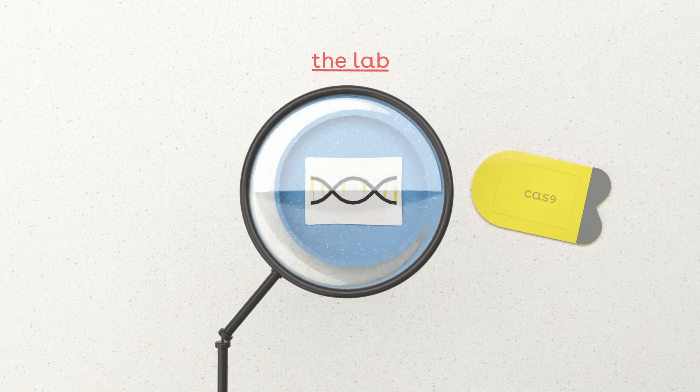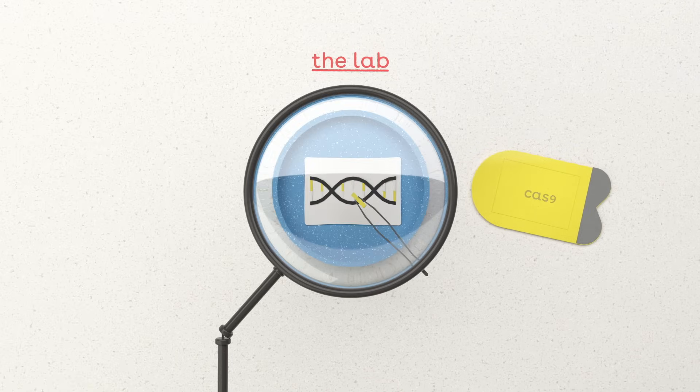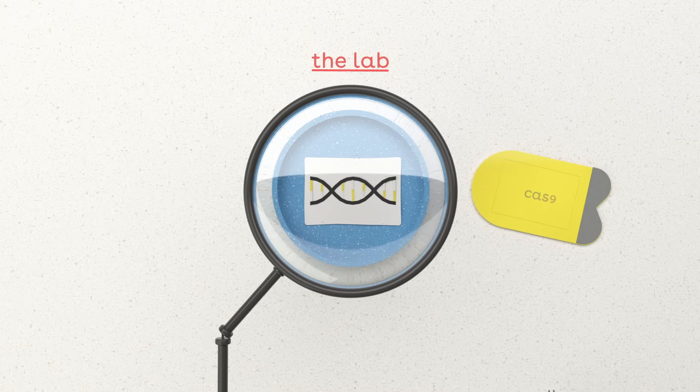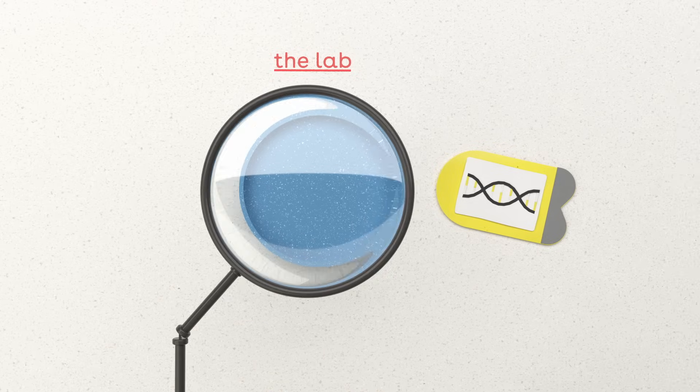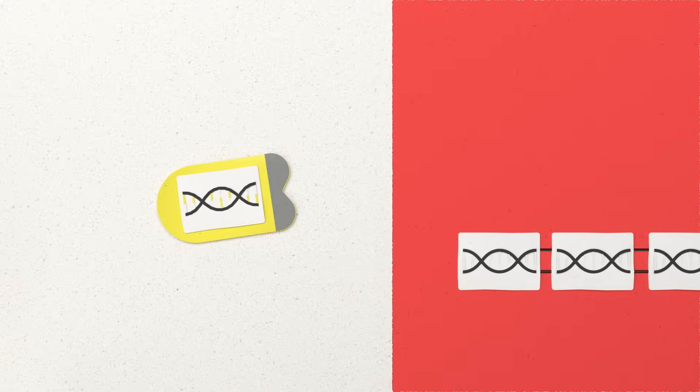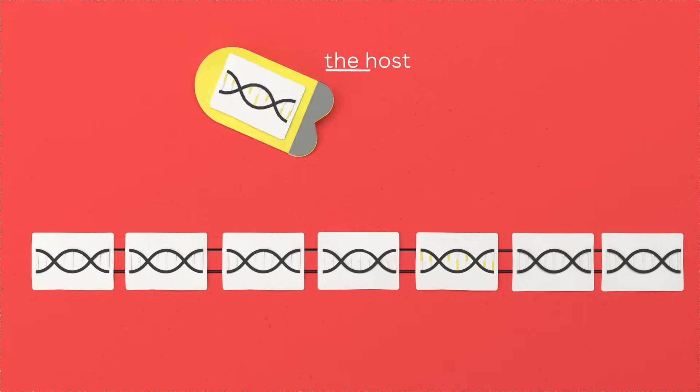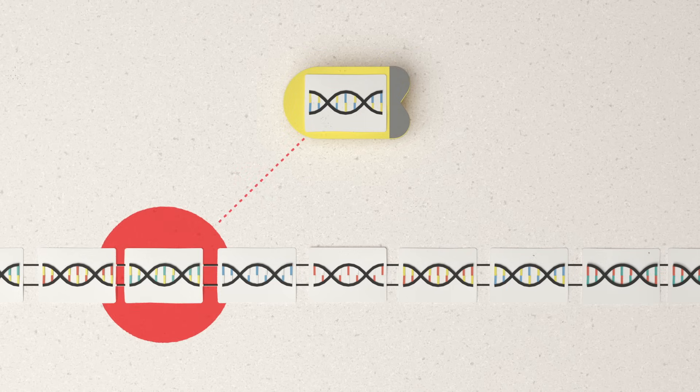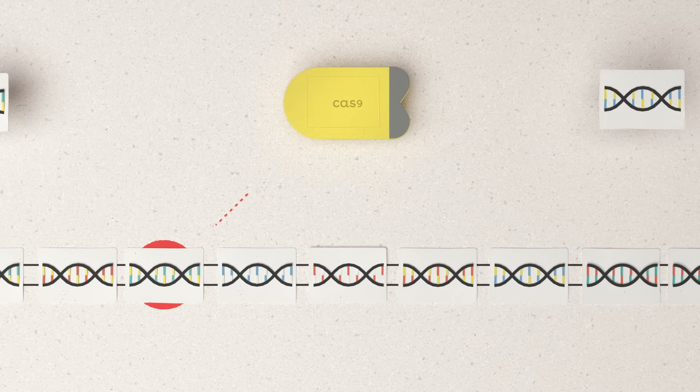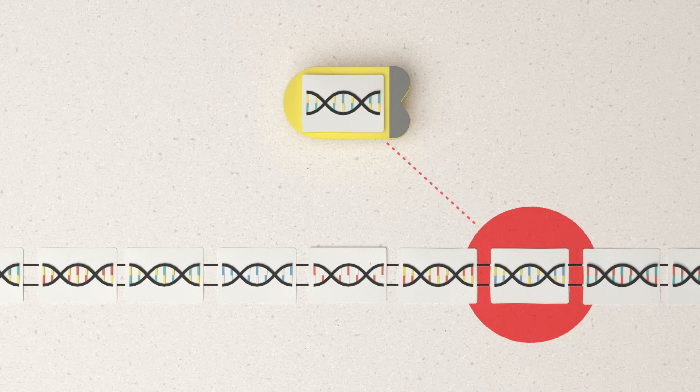Here's how it works in the lab. Scientists design a guide RNA to match the gene they want to edit, and attach it to Cas9. Like the viral RNA in the CRISPR immune system, the guide RNA directs Cas9 to the target gene, and the protein's molecular scissors snip the DNA. This is the key to CRISPR's power. Just by injecting Cas9 bound to a short piece of custom guide RNA, scientists can edit practically any gene in the genome.